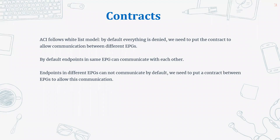In this section we will discuss ACI contracts. ACI follows the whitelist model - by default everything is denied. In the legacy network, everything is allowed by default and you apply access lists to block communication, but in ACI by default everything is blocked. If you want two endpoints to communicate, they need to be in the same EPG. Endpoints in the same EPG can communicate without any problem.